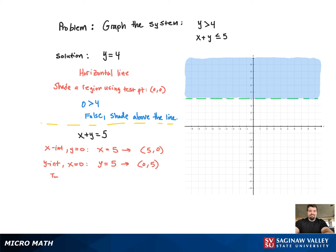Now, with the two points, we can graph the line. Notice that this one isn't strictly less than. This one is less than or equal to. So that means it's going to be a solid line.